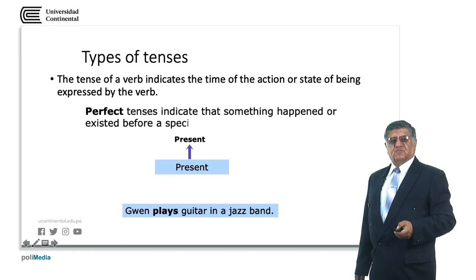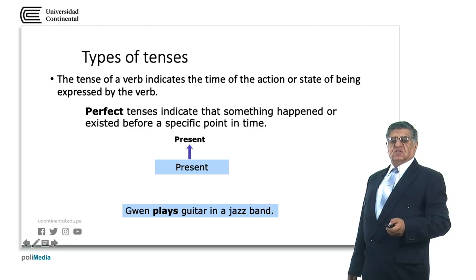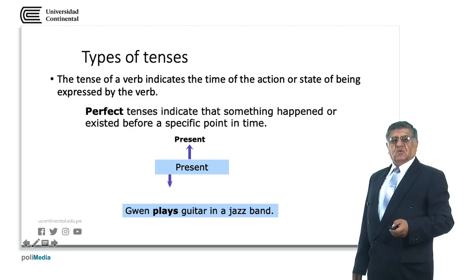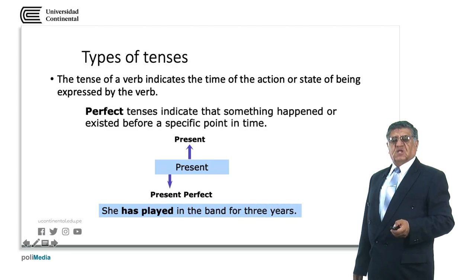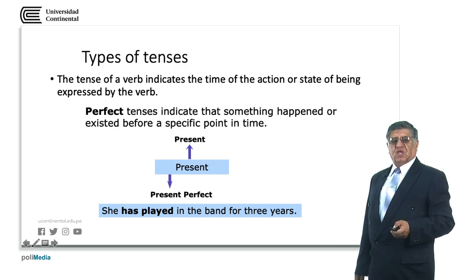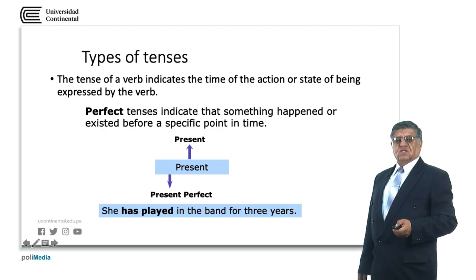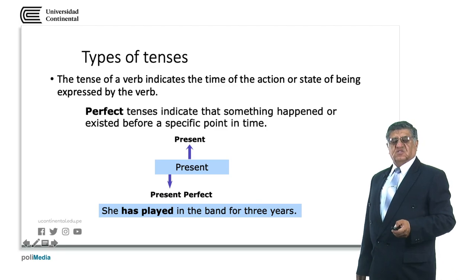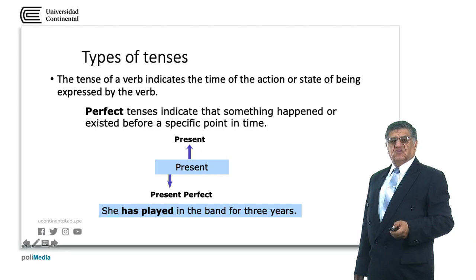We also have present perfect tenses, which are very common in English. In the present perfect, we use the auxiliary have — have is the simple form and has is the third person singular form. For example: she has played in the band for three years. Has played is the verb phrase indicating the present perfect — an action that started three years ago and probably continues at the present.